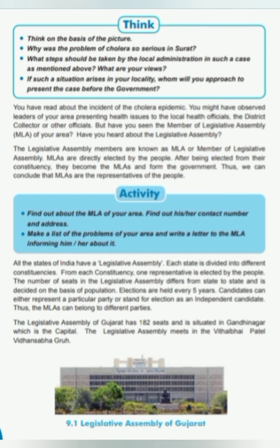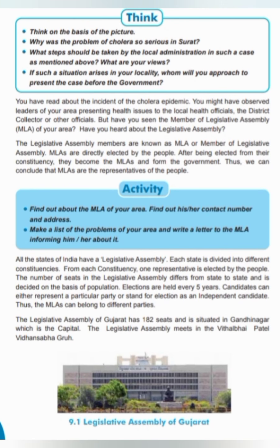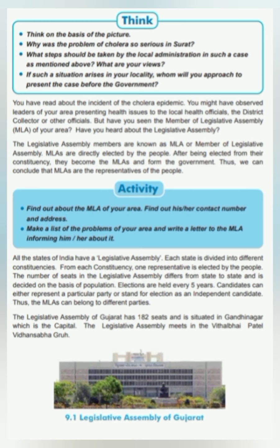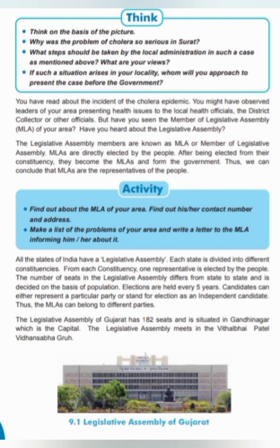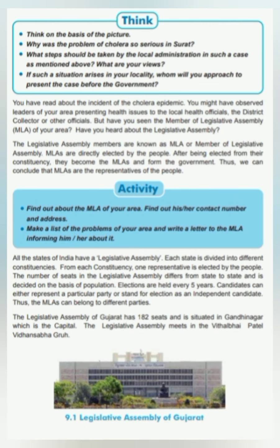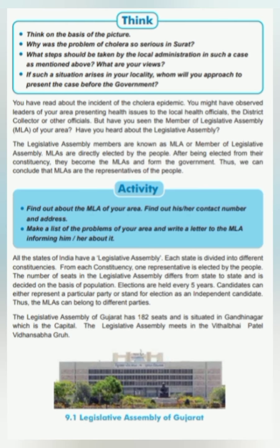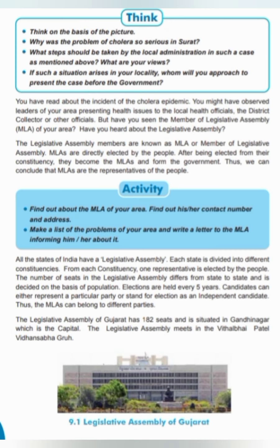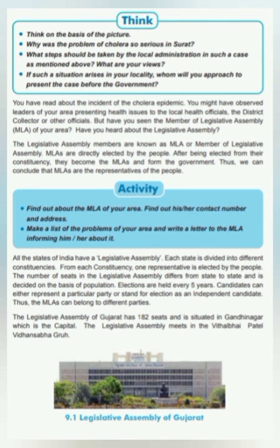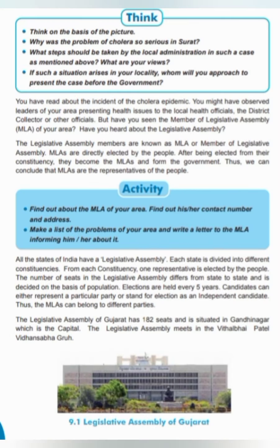An activity is given here. Find out about the MLA of your area — find out his or her contact number and address. You can perform this activity and write the answer in your notebook. Make a list of the problems of your area and write a letter to the MLA informing him or her about it. All the states of India have a Legislative Assembly. Each state is divided into different constituencies, and from each constituency one representative is elected by the people.